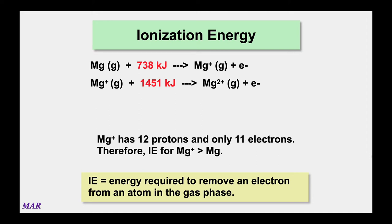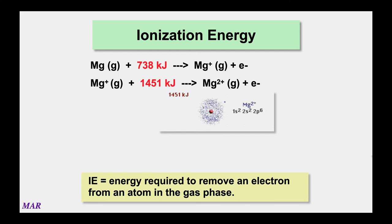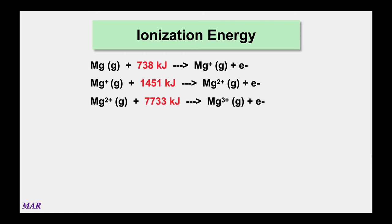Making Mg²⁺ requires 1,451 kJ/mol — higher than the first ionization energy. We say the ionization energy for Mg⁺ is greater than that for neutral Mg. The more protons pulling on fewer electrons, the harder it is to remove each subsequent electron. Removing the second electron requires 1,451 kJ/mol. At Mg²⁺ you have a neon core, and the sum of those first two values is about 2,100 kJ/mol.